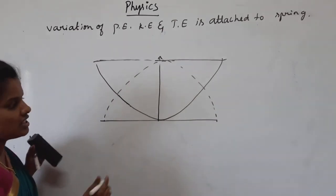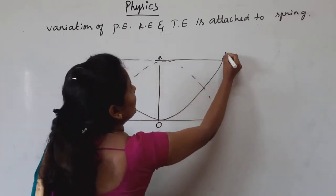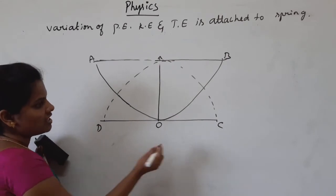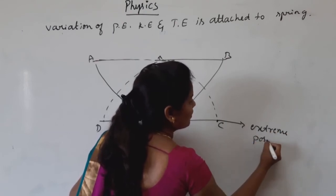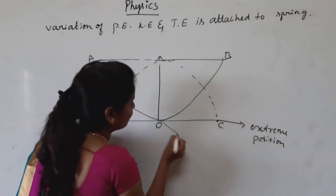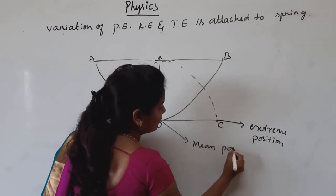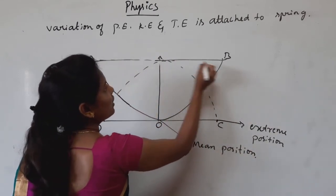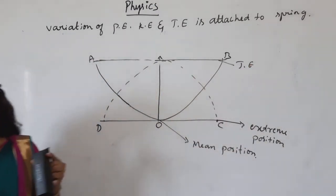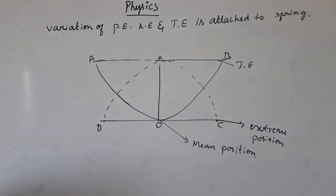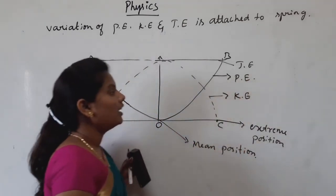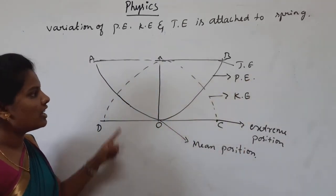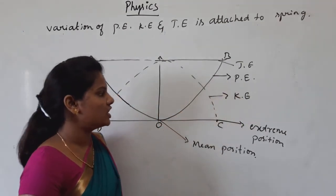From the graph, points O, A, B, C, and D are indicated. This shows the extreme position and the mid position. The graph shows total energy, kinetic energy, and potential energy — this is the graphical picture of their variation.